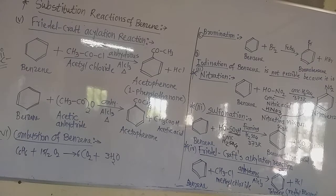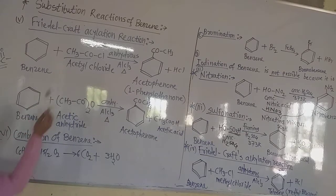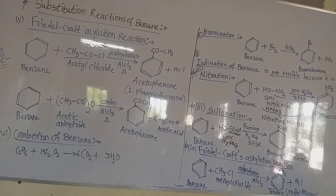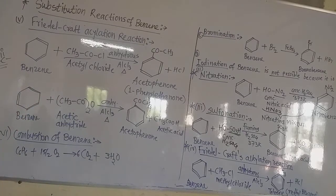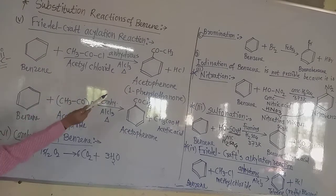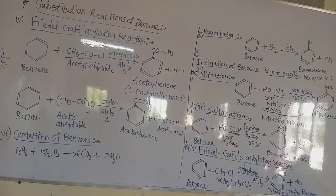Acetylation is always done by two different reagents: one is acetyl chloride and another is acetic anhydride. Both have the acetyl group. When the acetyl group is introduced onto a carbon of the benzene ring, the hydrogen and the chlorine form HCl as byproduct, and there is formation of acetophenone.